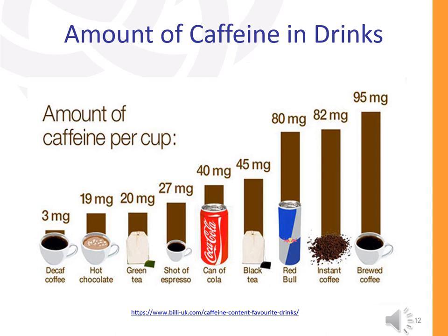This slide shows the amount of caffeine per cup in familiar beverages. The least amount of caffeine is in a cup of decaffeinated coffee, hot chocolate, and green tea. Black tea has more than twice the amount of caffeine than green tea. And brewed coffee has over twice the amount of caffeine in it than black tea or Coca-Cola.